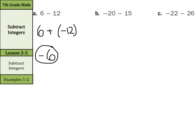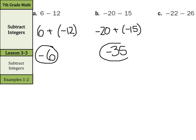Negative 20 minus 15: that's the same thing as keeping the negative 20, changing subtraction to addition, and the opposite of 15 is negative 15. With the same signs — both negative — add 20 plus 15 to get 35 and keep the negative: negative 35.